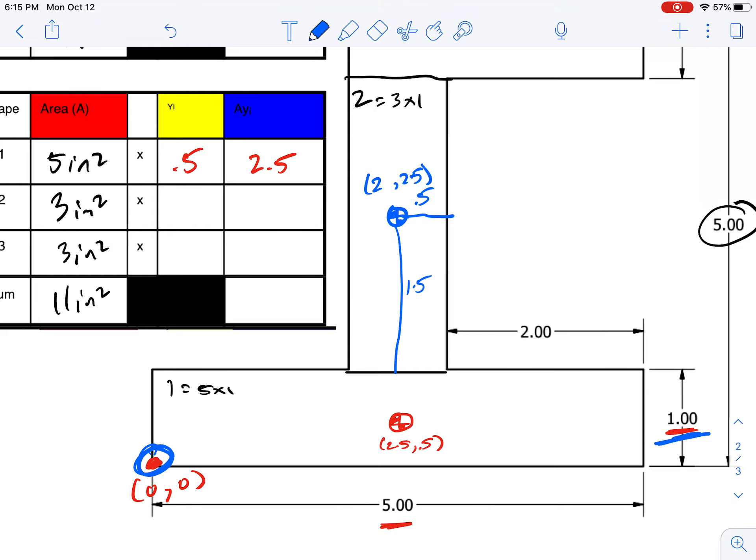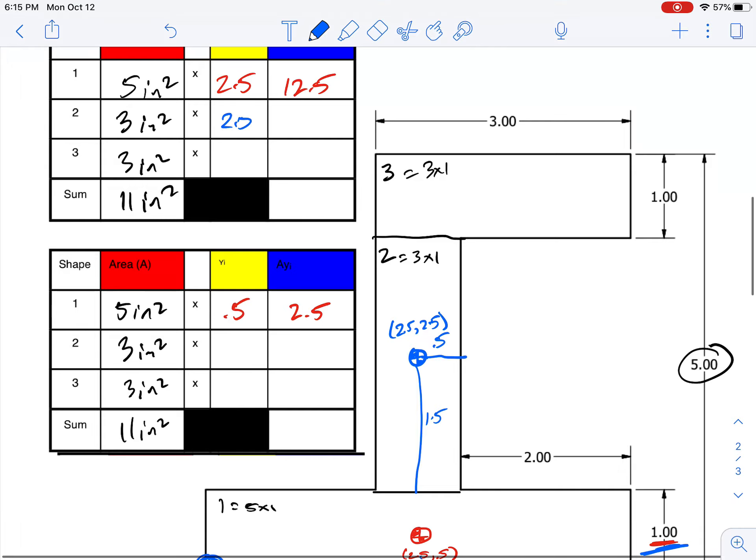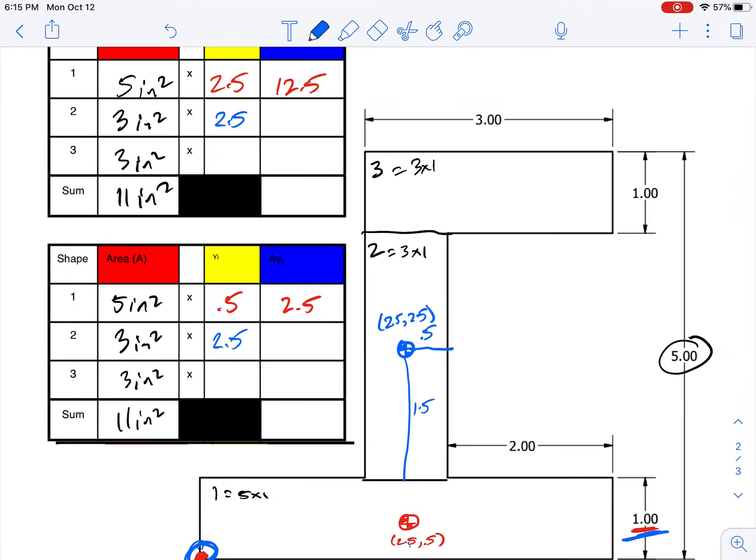And the x location, this is already 2.5 over and it's directly above it, so this is also 2.5. So both the x and y locations of this shape's centroid are at 2.5. Then 3 times 2.5 gives us 7.5 for our weighted area, and 3 times 2.5 gives us 7.5 here as well.